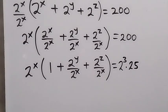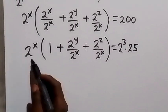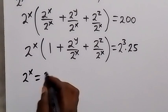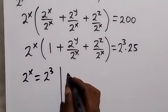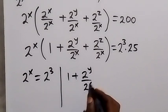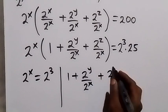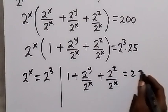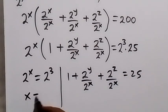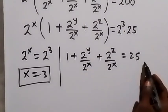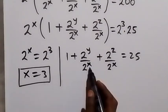From here, when we compare 2 raised to power x with 2 raised to power 3, and compare the bracket expression (1 plus 2^y over 2^x plus 2^z over 2^x) with 25, then x will be equal to 3. We take 1 to this side and substitute the value of x.